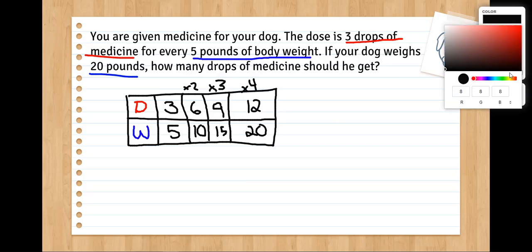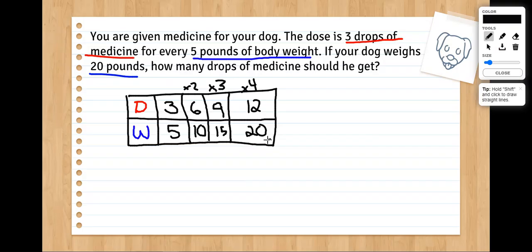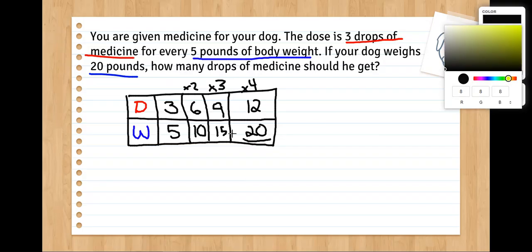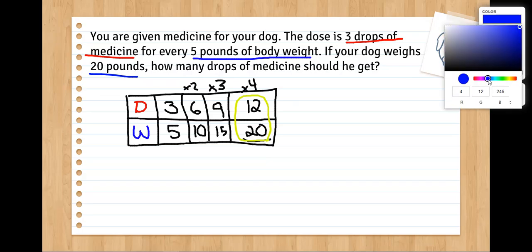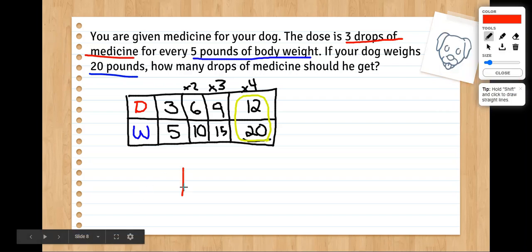So I know that now that I've reached 20 pounds of doggy weight, I can find the matching proportional amount for drops. So if I have 20 pounds of dog, I need 12 drops of medicine. So our answer is that if our dog weighs 20 pounds, we need 12 drops of medicine.